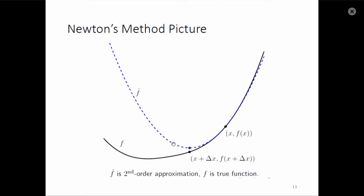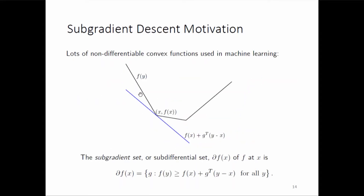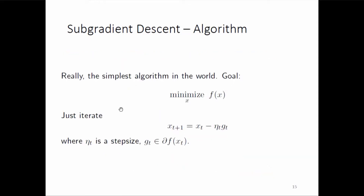If the function is differentiable then there is only one element in the sub-differential, which is the gradient — so the sub-gradient becomes the gradient. But if the function is convex and non-differentiable there may be infinitely many sub-gradients.